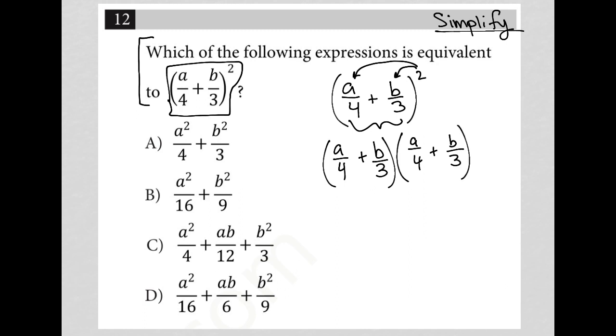And from here, I can FOIL. So I can take my first term times my first term here. That will give me a squared over 16, right? A over four times a over four. I can take my outer two terms here. That would give me an ab over 12.